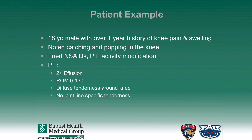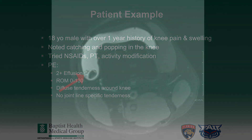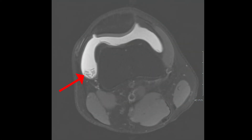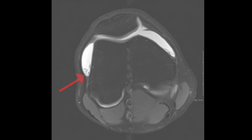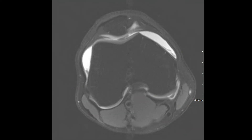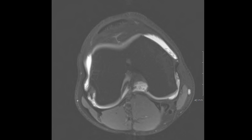However, there was no specific joint line tenderness at the meniscus or the cartilage. A review of the patient's MRI demonstrates multiple loose bodies in the knee, depicted by the red arrow.